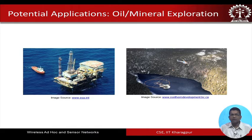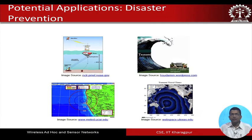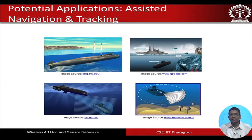Oil and mineral exploration is another application that can be achieved using underwater sensor networks. Disaster management — including tsunamis and different tidal waves — is also an important application. Prevention of coastal areas from natural disasters, prediction of tsunamis, huge waves, and tides can be obtained through deployment of underwater sensor networks. Another application is assisted navigation and tracking, such as tracking different underwater activities and assisting a submarine in its navigation.